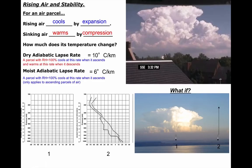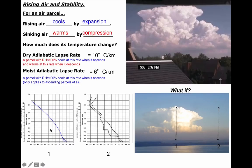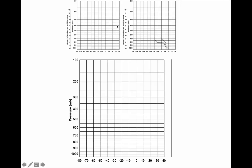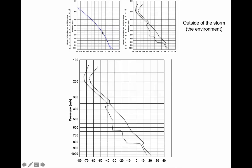If the parcel temperature is warmer than the environment — just like a hot air balloon — it continues to ascend. Balloon two goes up and traces out the temperature and dew point temperature of the environment. Because balloon one ascends with the parcel, I know its temperature can only change at one of two rates: below the cloud at 10 degrees per kilometer where relative humidity is below 100%, and inside the cloud at 6 degrees per kilometer.